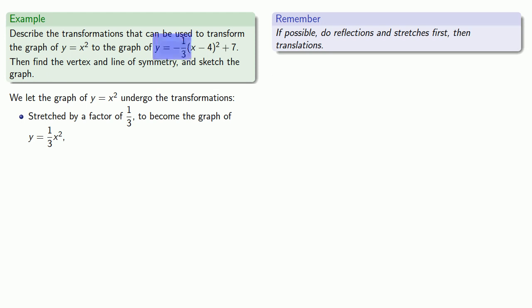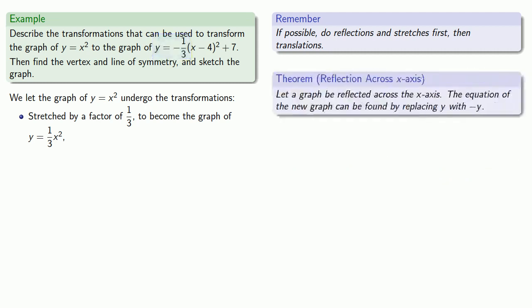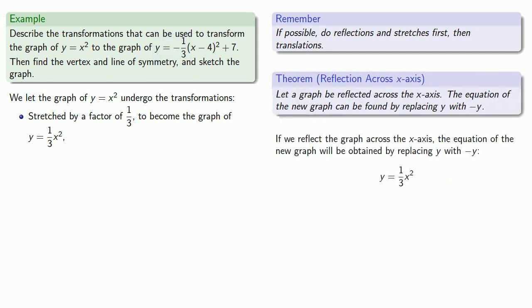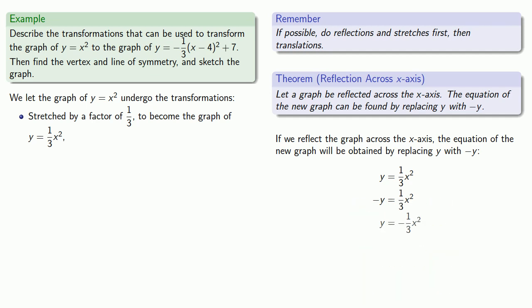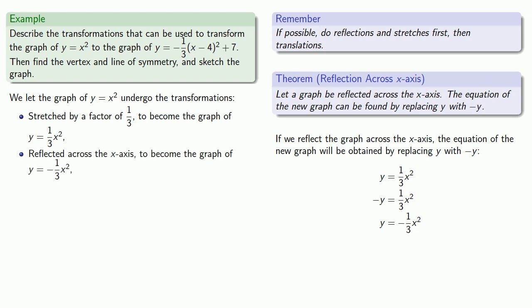The minus sign suggests that there is a reflection across the x-axis. If we reflect the graph across the x-axis, the equation of the new graph will be obtained by replacing y with minus y, which we solve for y. Now we have a coefficient of minus one-third, which is what we'd like to see. So our next transformation was reflecting across the x-axis, giving us the graph of y equals minus one-third x squared.